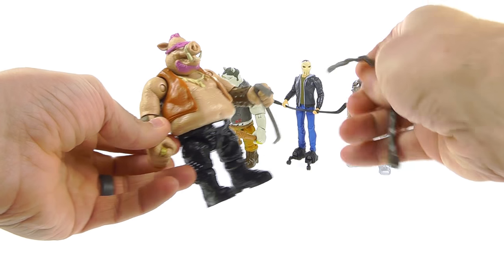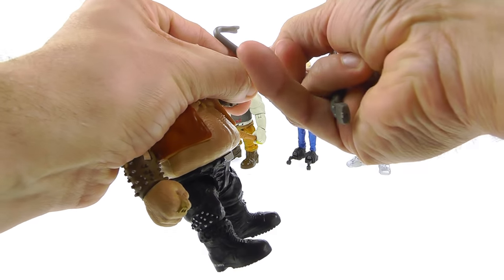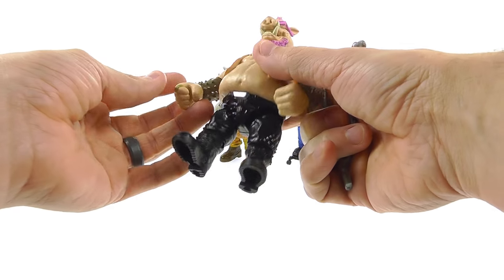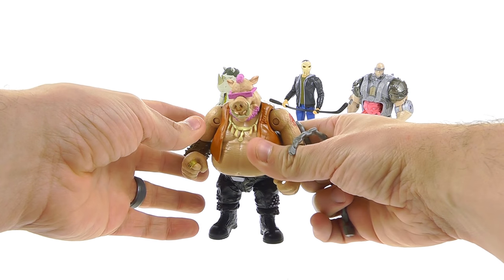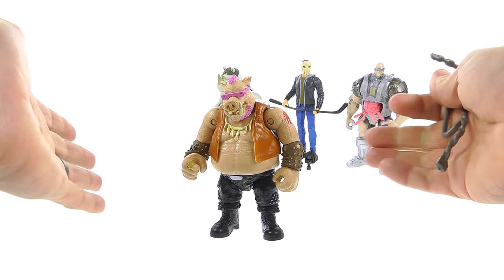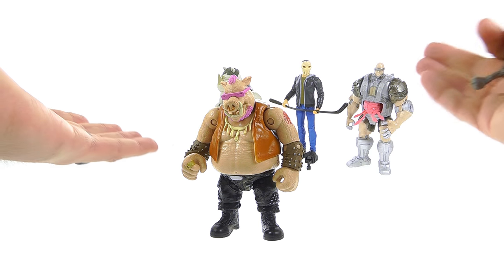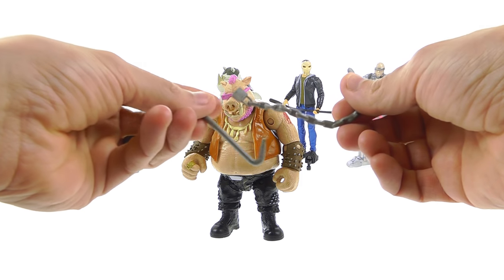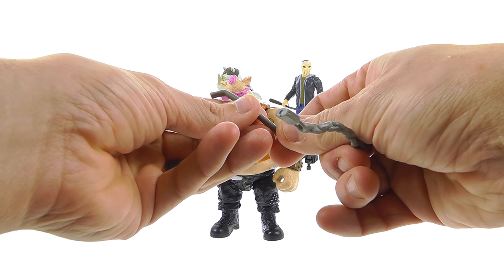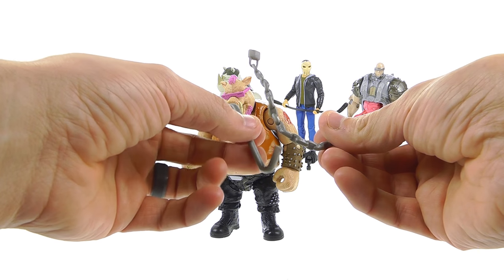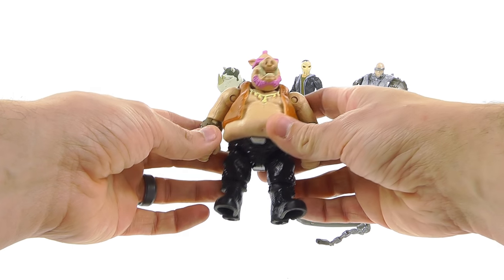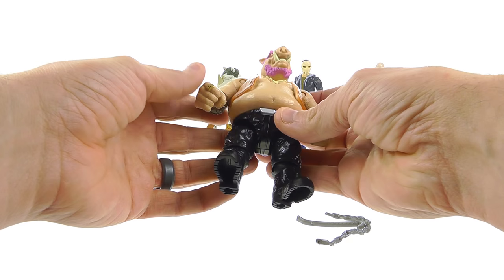For his accessories, he comes with two of them. One thing I will say is that these new figures do seem to come with more accessories. You get this chain kind of weapon with a lock on the end of it, and then you get a regular crowbar, both molded in grayish plastic. But they're cool. The overall look for this guy is actually really very nice as well.